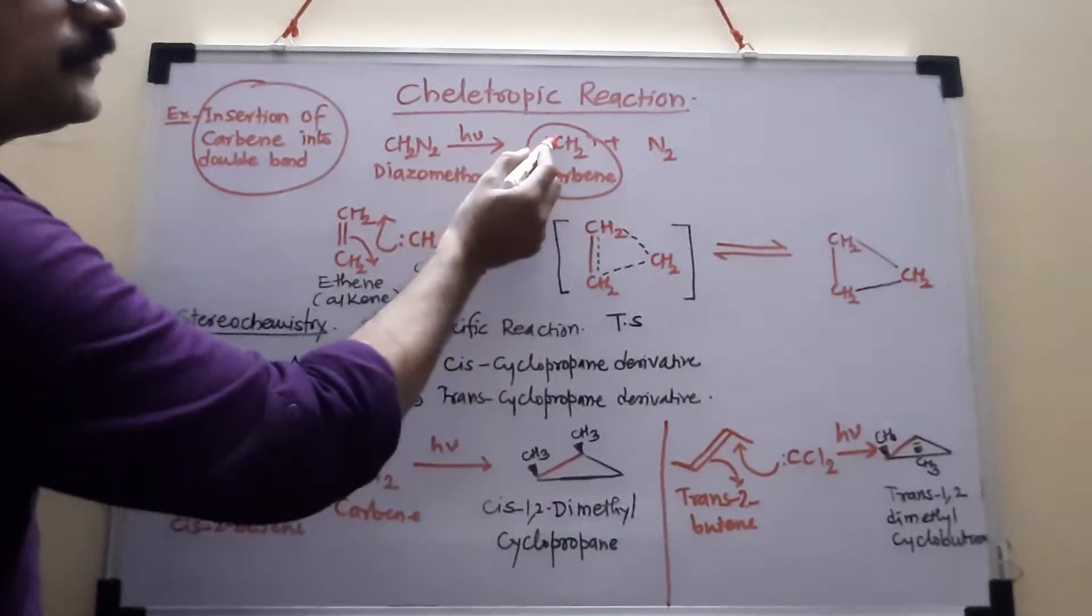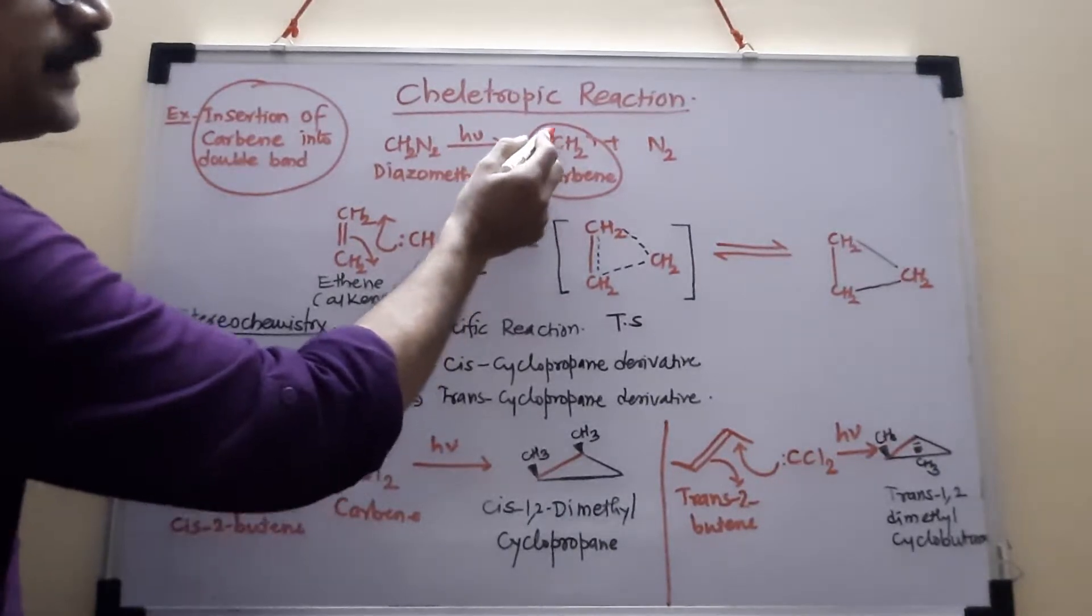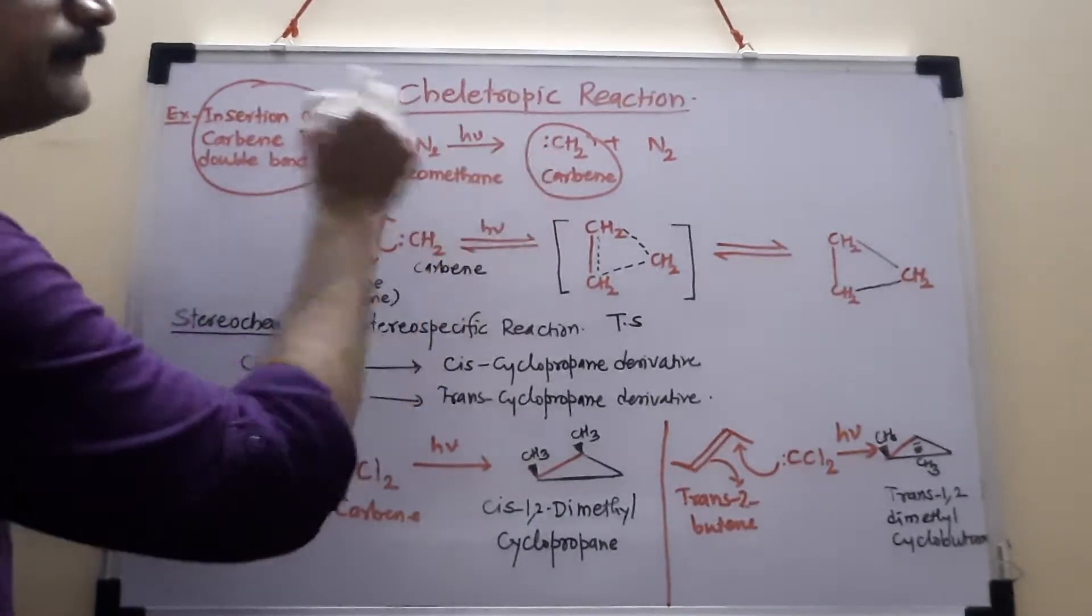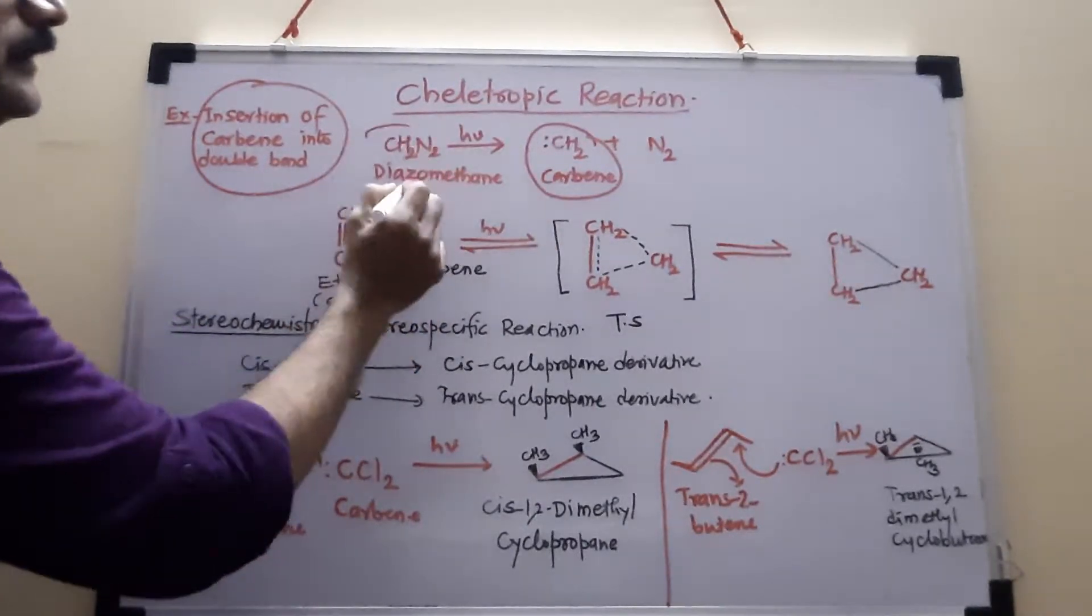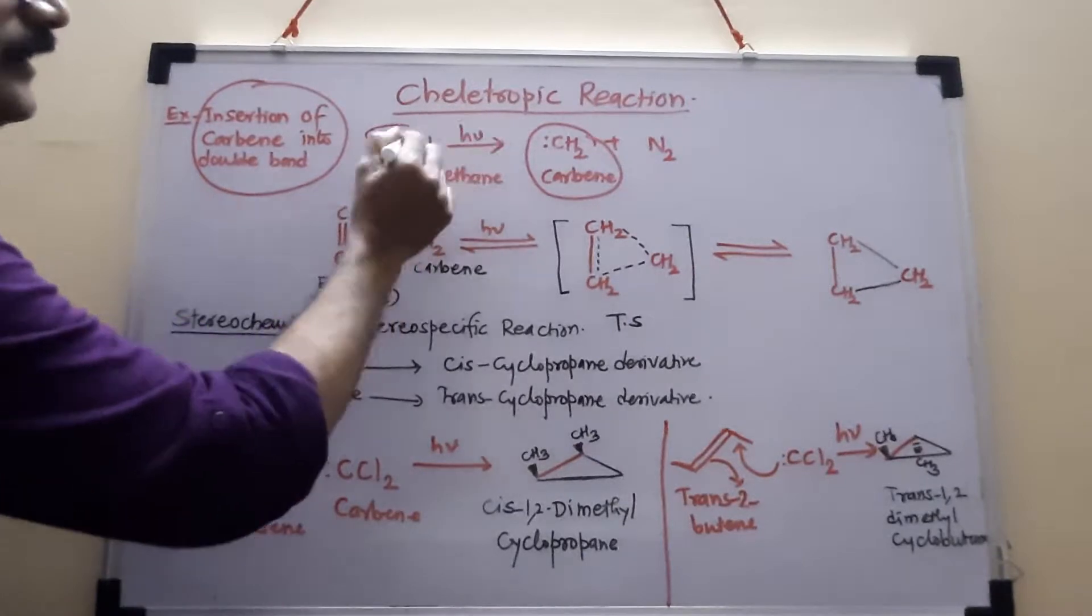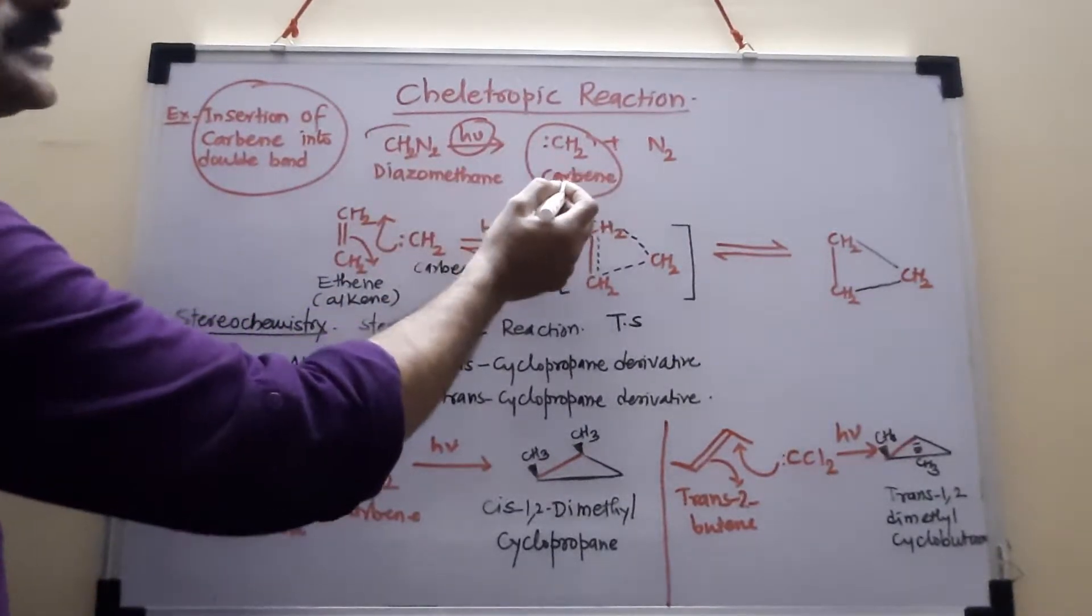You can see here, there are four electrons on this carbon, that's why no charge. But having a lone pair of electrons and the source of this carbene is diazomethane. When we irradiate diazomethane in presence of light, we get a carbene.